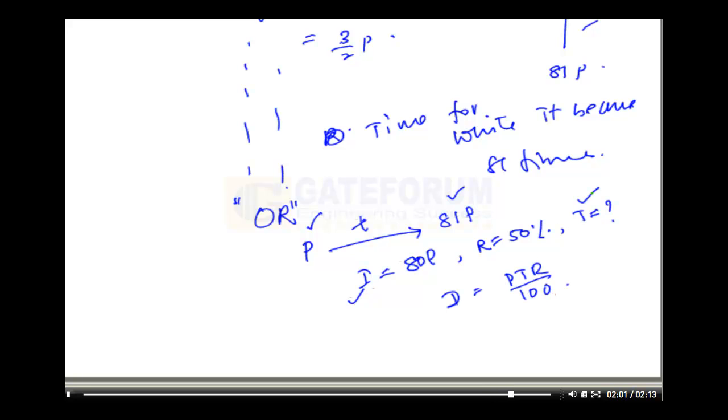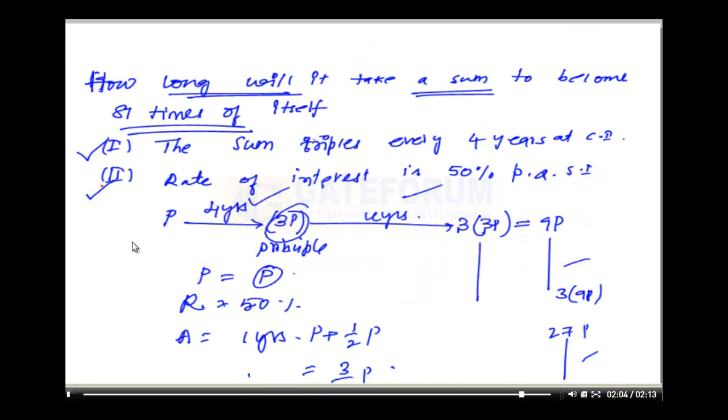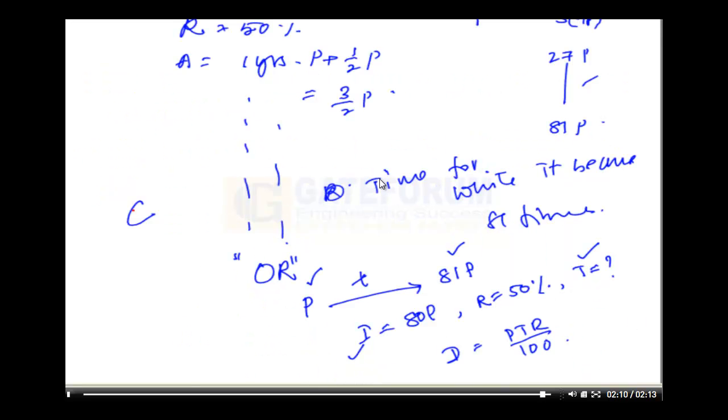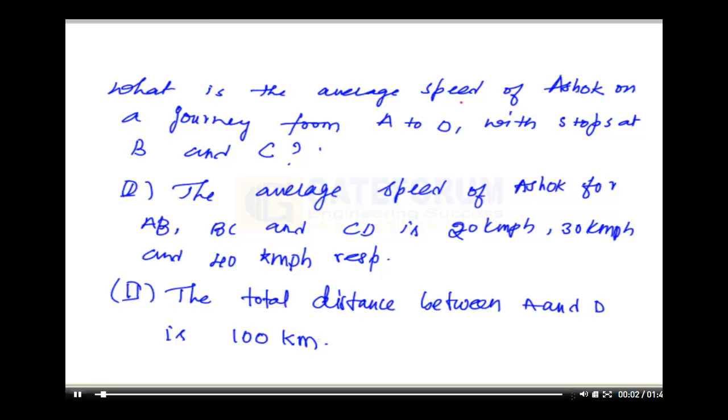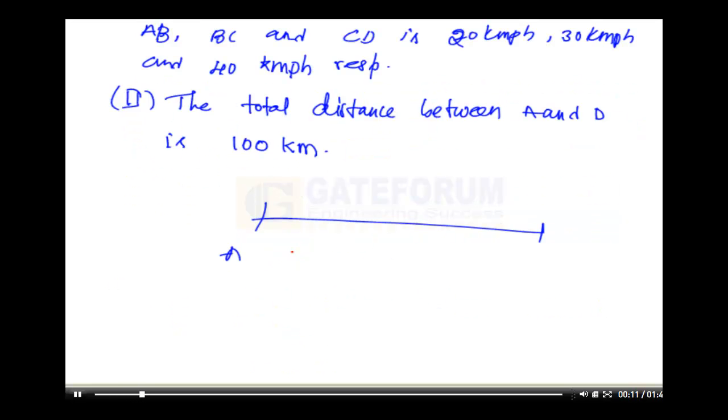That means we can answer this question by only statement 2. So we can answer this by 1 as well as by 2. So answer is C. Average speed of Ashok where he has travelled from A to D with stops at B and C.